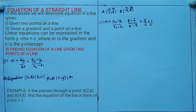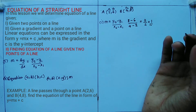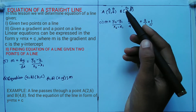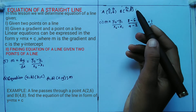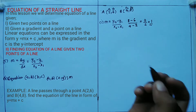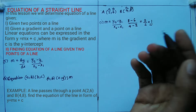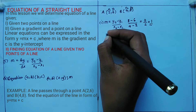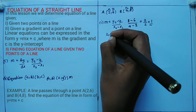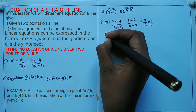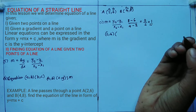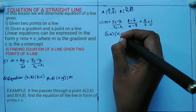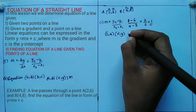Now that I have the gradient, I pick any one of the given points — let's say point A(2, 6). I also pick a random point (x, y), and my gradient is 1. I set up the gradient formula: (y - 6) / (x - 2) = 1.